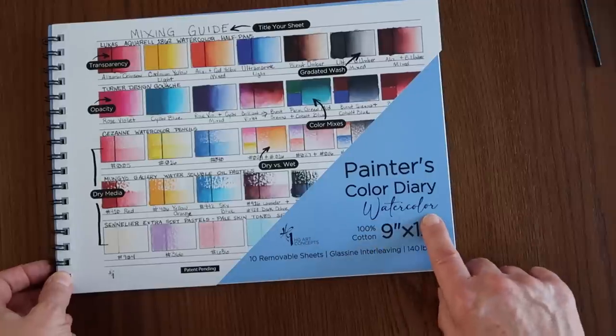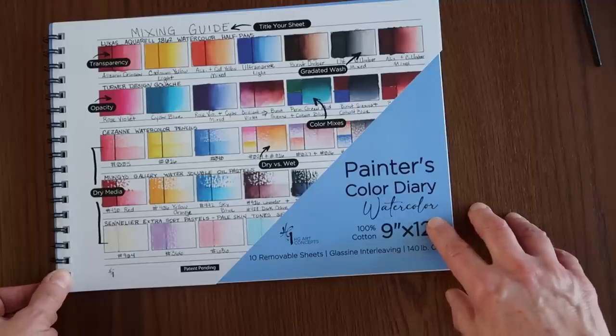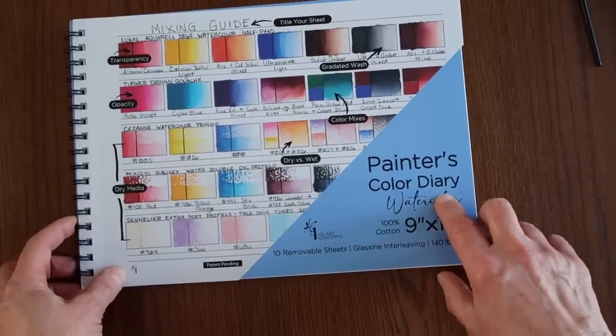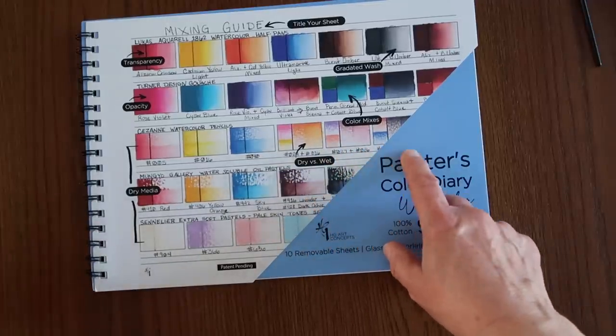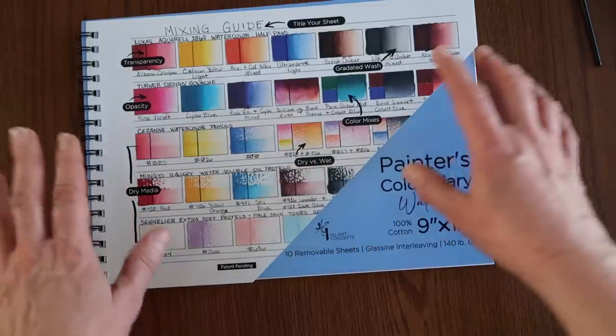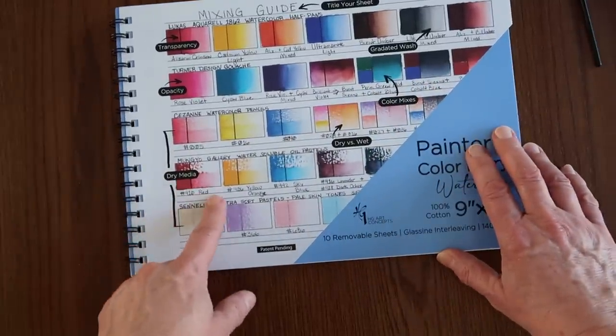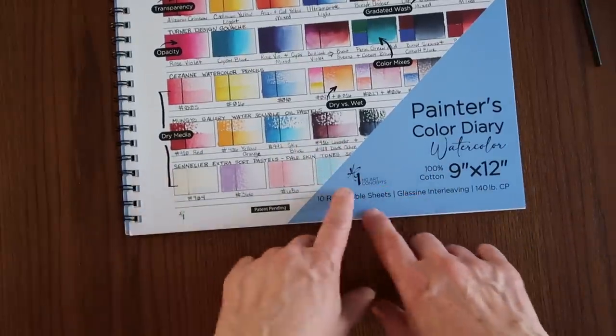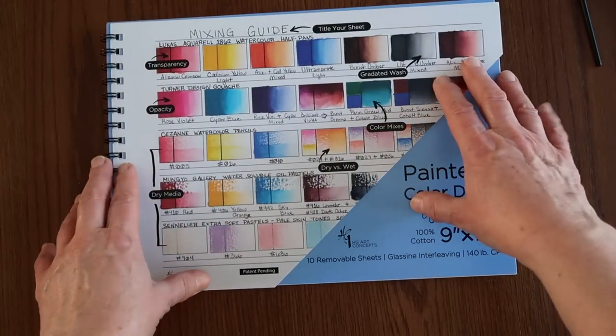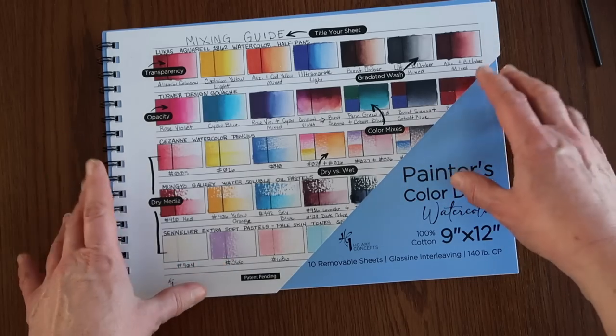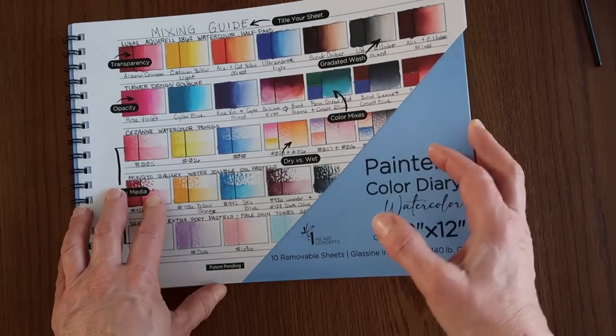You can do dry versus wet. So this one is for wet media, water-based media. They do have another version, I believe, for oils. But this one is for watercolor. So that's why they're touting the dry versus wet. You can use watercolor pencils, near colors, any type of dry media that is water-based, and then wet it and see how that looks. You can even just use dry media. So if you want to use pastels and just leave them that way, you can do that. It's got a lot of information on the front telling you what the benefits of this are. I kind of wish the layout was a little bit different because it's a little too busy for the eye.